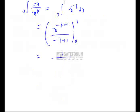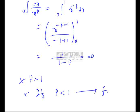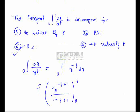This is nothing but 1 by 1 minus p. Now if p equals to 1 this value is infinity so it is not convergent. Now if p is less than 1 obviously this is a finite value and hence the required answer is C.